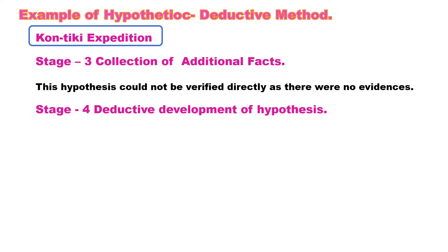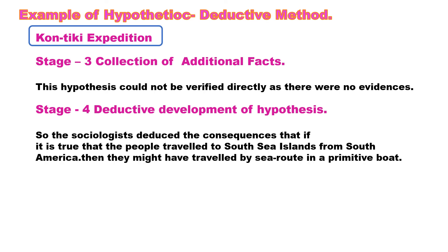The fourth stage is the deductive development of the hypothesis. Assuming the first hypothesis to be true — that people living in South Sea islands might have come from South America — the sociologists deduced the consequence that if they had indeed travelled from South America to the South Sea islands, they must have travelled by sea routes in a primitive boat. The primitive boat is a loosely constructed raft with poor facilities for steering and only limited space for storing food, and such a primitive boat must have been capable of undertaking the journey in those days.